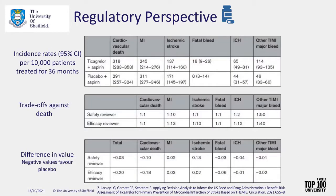Very recently - literally in August this year - the FDA published its first use of a quantitative benefit-risk method. The paper is linked at the bottom. This was the ticagrelor example from the introduction, where the main outcome was reduction in cardiovascular death and the main risk was potential increase in bleeds. They used those quantitative methods, which are recommended for specific circumstances where the balance of benefits and risks is marginal and these methods can support the decision-making.